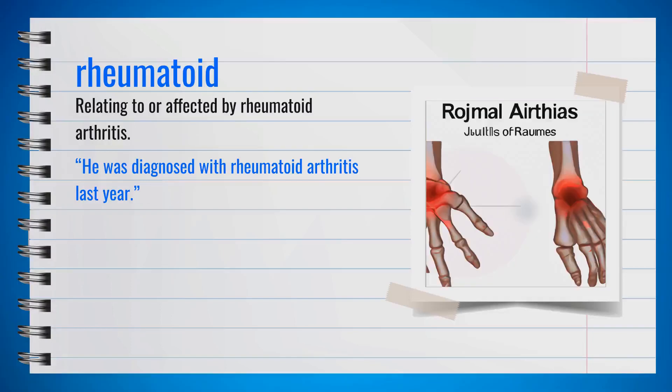The word rheumatoid, spelled R-H-E-U-M-A-T-O-I-D, is an adjective. It describes something relating to or affected by rheumatoid arthritis. For instance, he was diagnosed with rheumatoid arthritis last year. This term is often used in medical contexts.